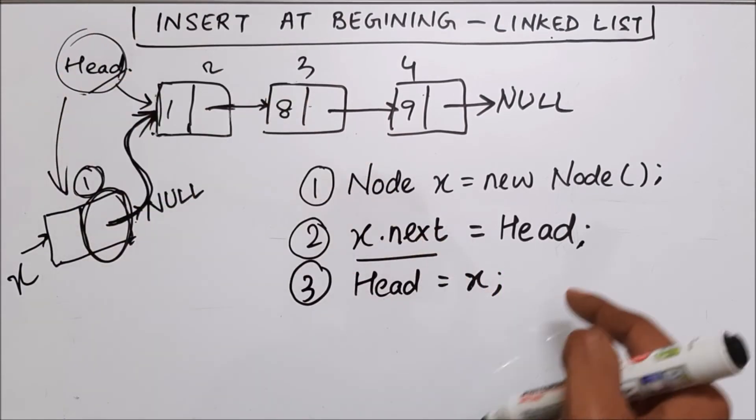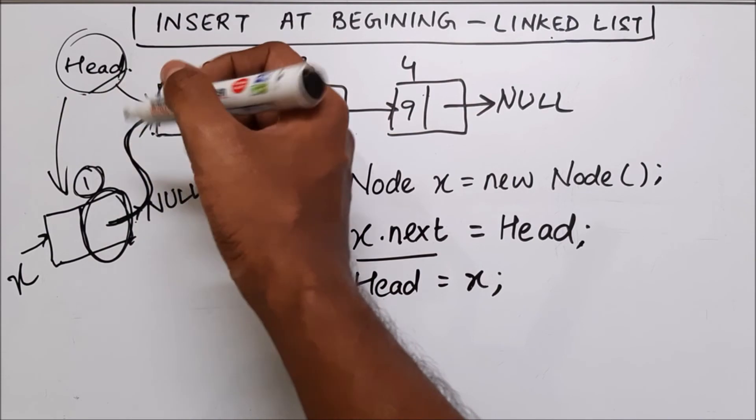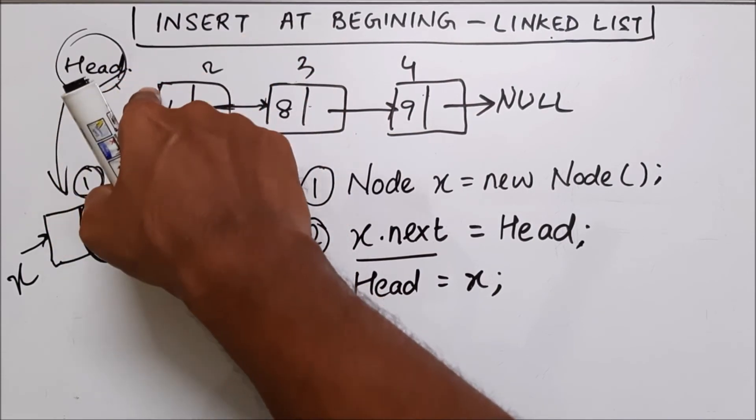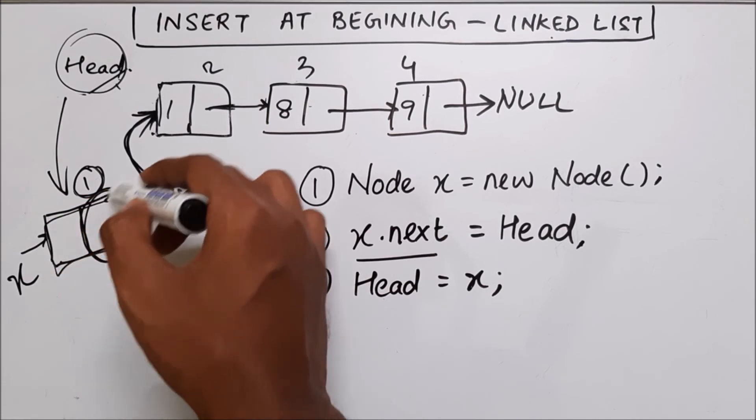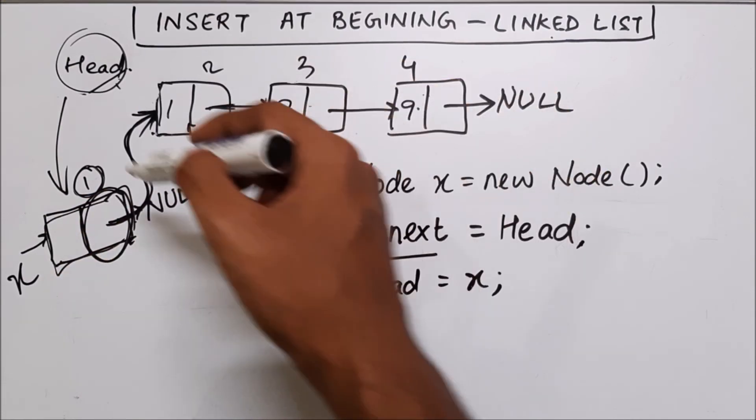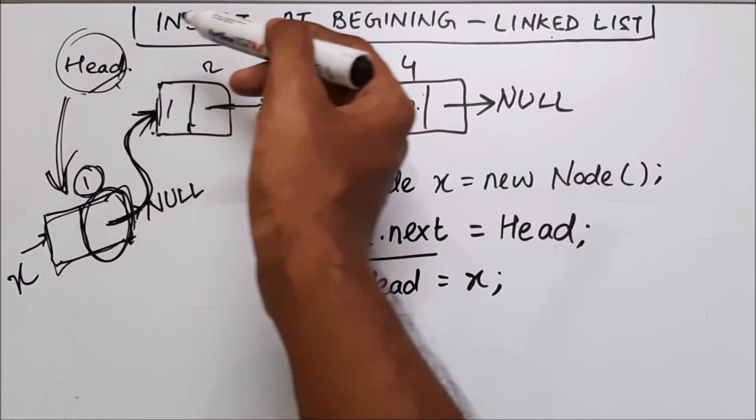So by this line, head will start to point over here and this connection will be broke. So now we have a new linked list of four nodes and head pointing to the node which we have inserted.